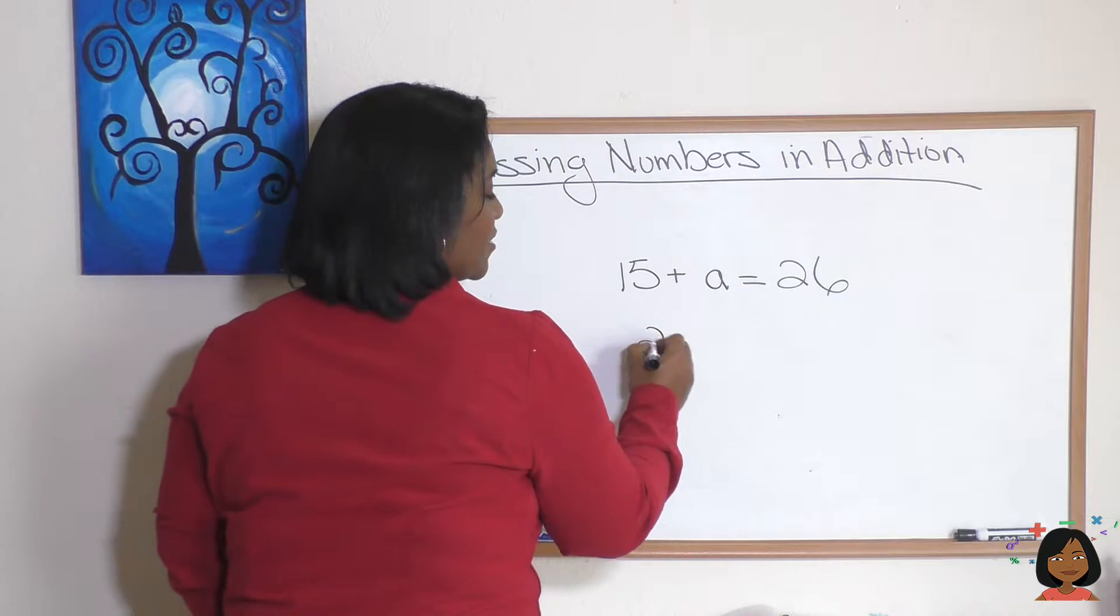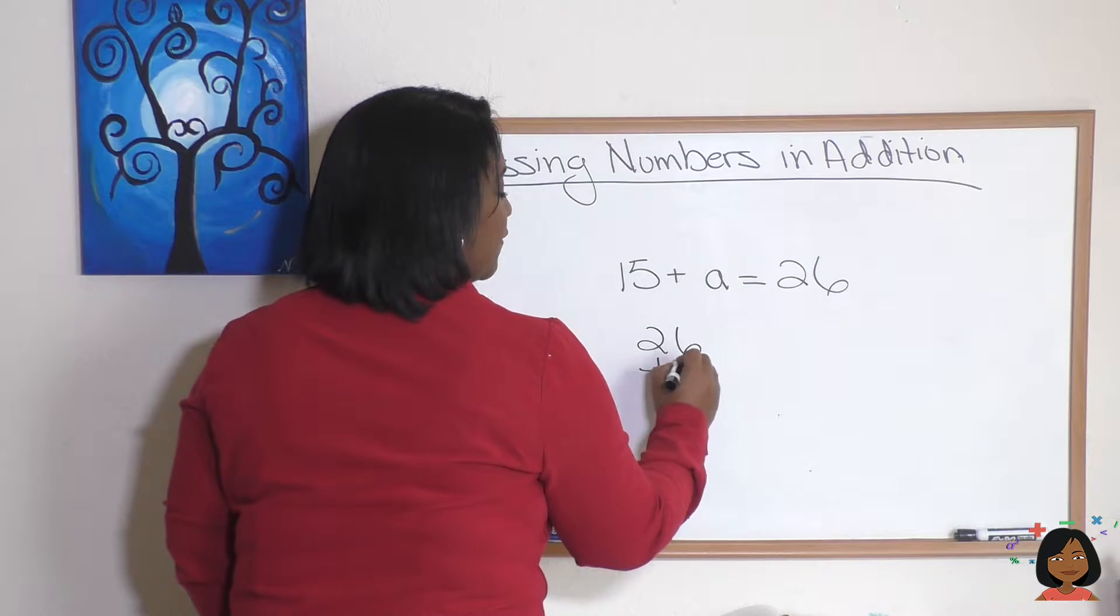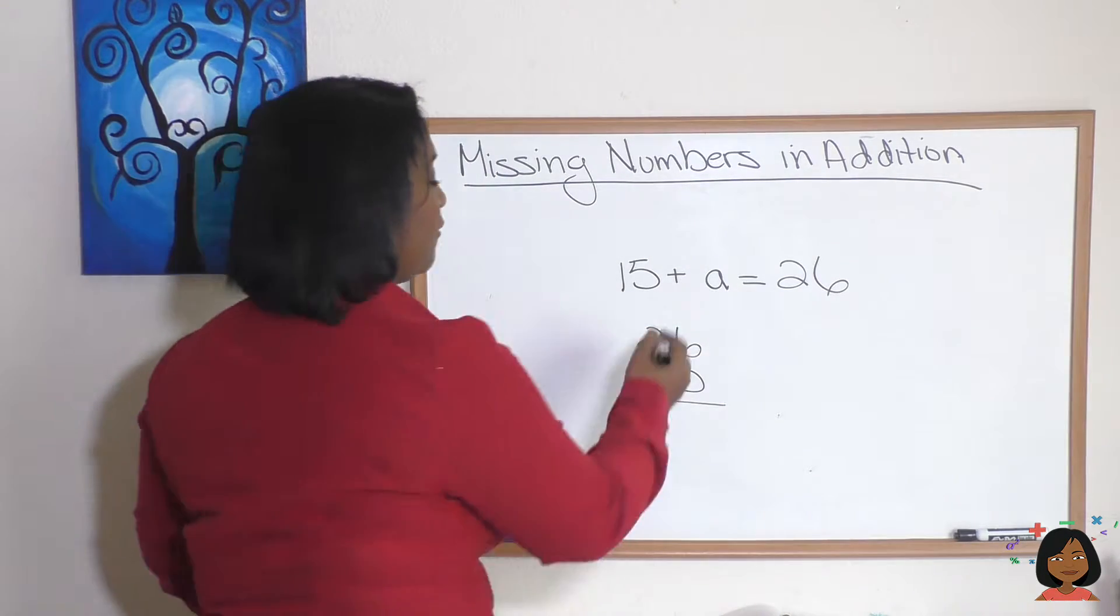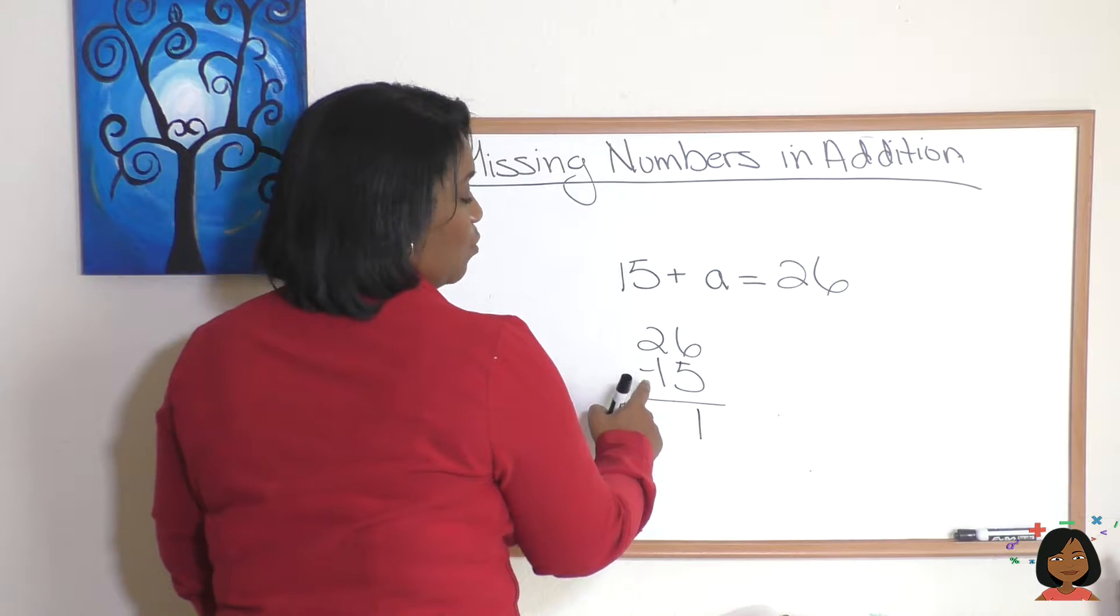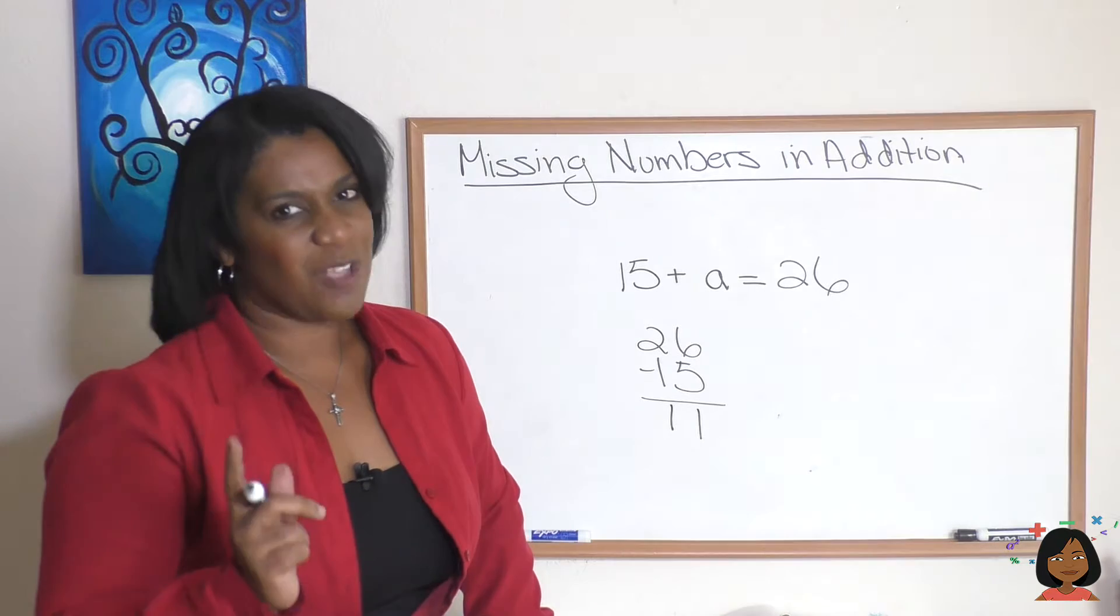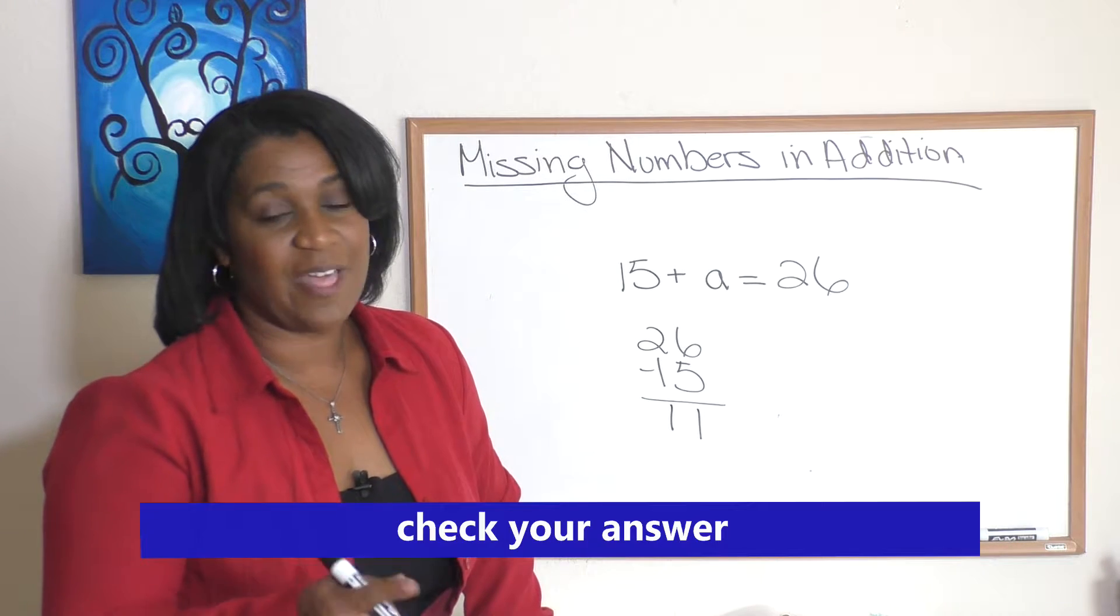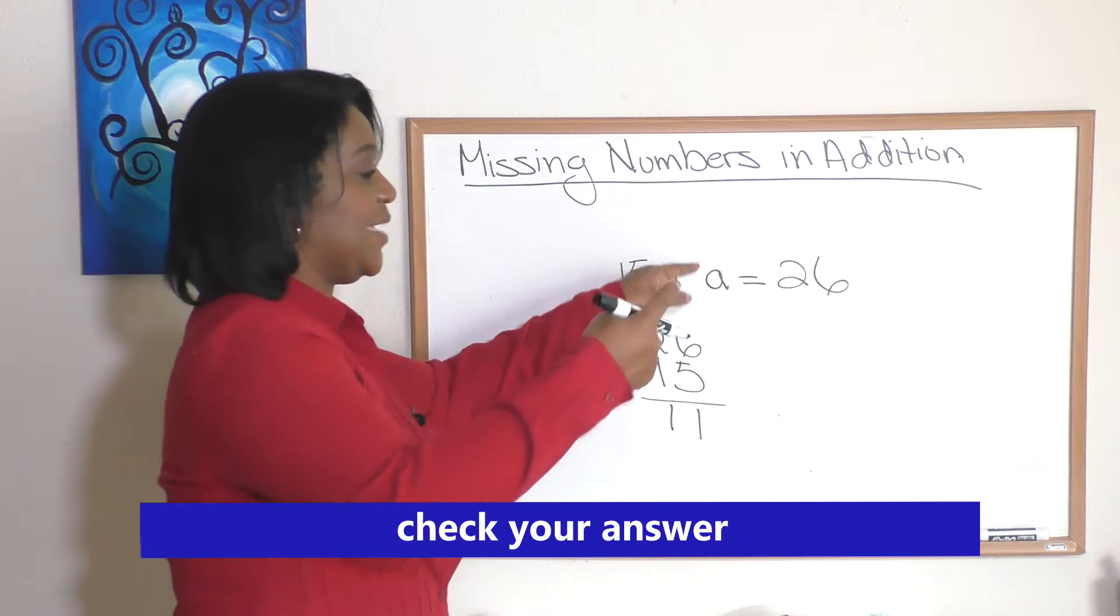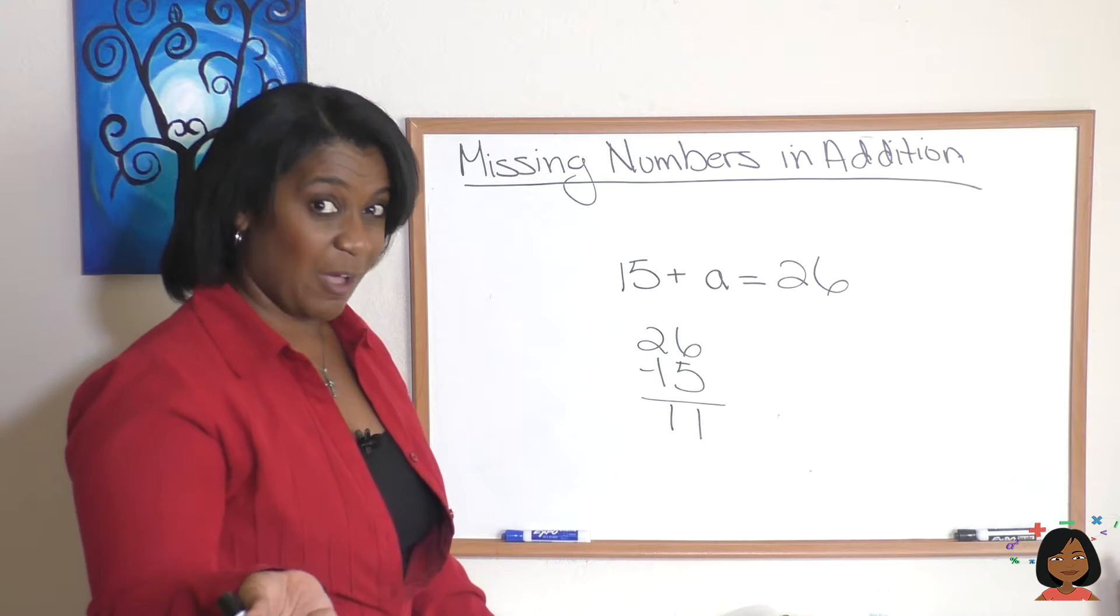We're going to start with our 26. We're going to subtract our 15 and now we do our math. 6 minus 5 is 1. 2 minus 1 is 1. So we believe our answer to be 11, but there's only one way to really find out and that is to check your answer by putting it back into this. We call this an equation.